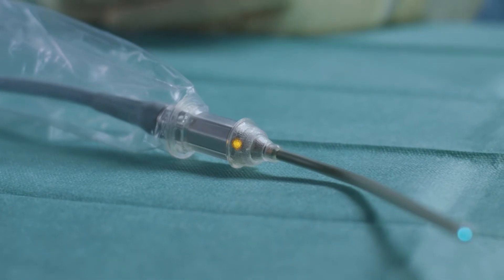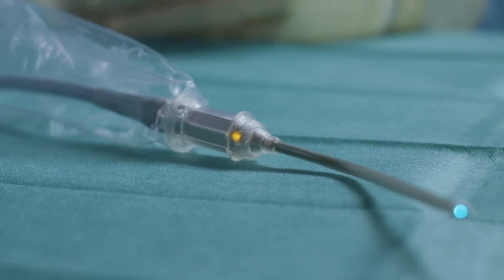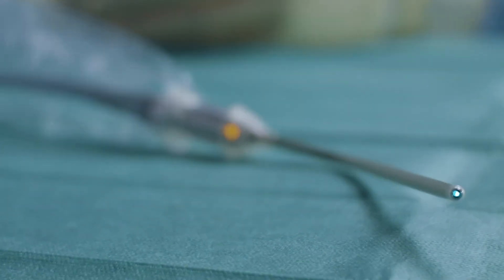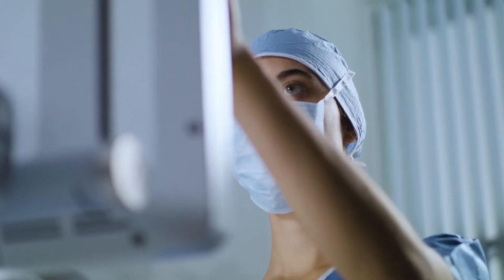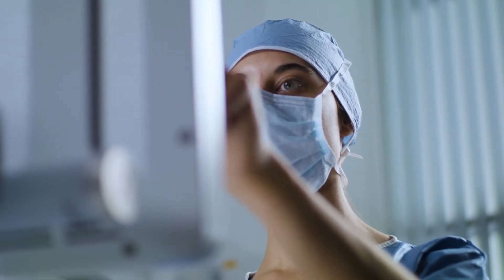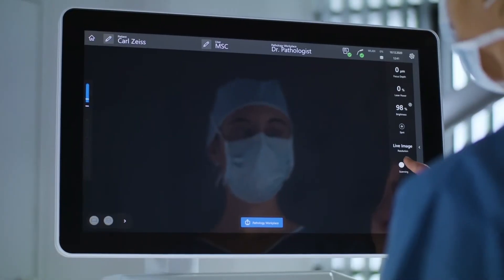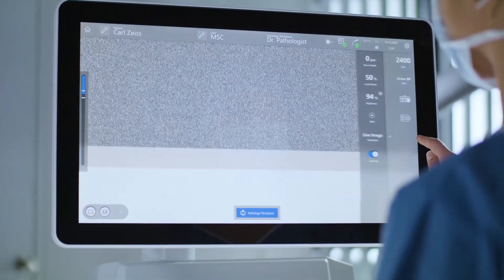The orange indication lamp on the probe of Zeiss Convivo shows whether scanning is switched on or off. To find the focus point of the Zeiss sterile sheath for Zeiss Convivo, switch on scanning and change the following settings.